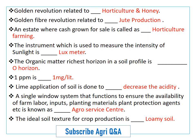Golden revolution is related to horticulture and honey. Golden fiber revolution is related to jute production. An estate where cash crops are grown for sale is called horticulture farming.